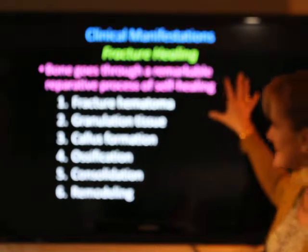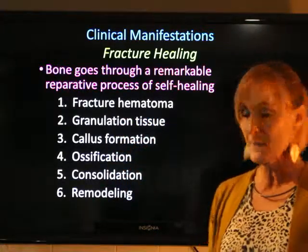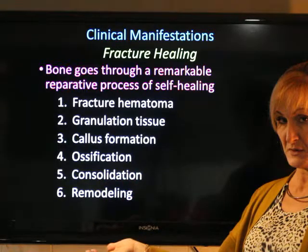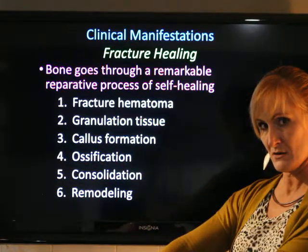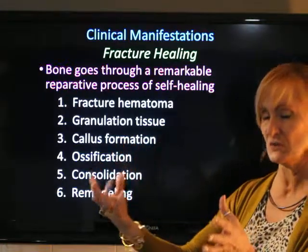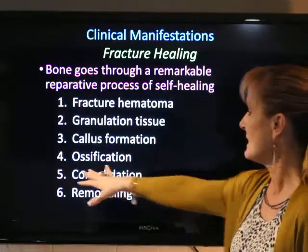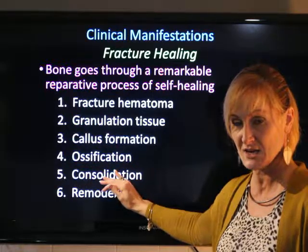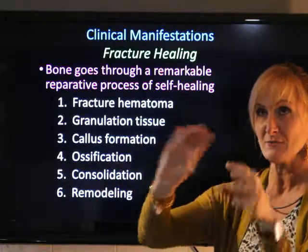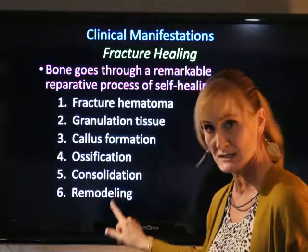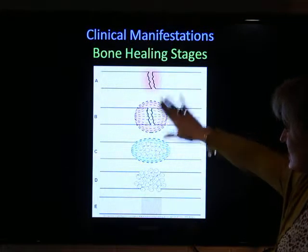When a bone is broken, here are the stages of healing: first there is bleeding at the site — a hematoma forms from bone marrow and surrounding vessels, though not as diffuse as a sprain or strain. Then granulation tissue starts forming, then a callus forms around that, then ossification begins — the bone starts to reform. It consolidates and then remodels, retaking the shape of the old bone. This process can last up to a year.